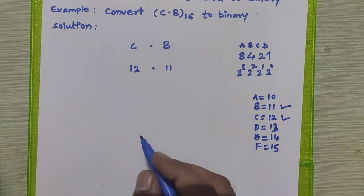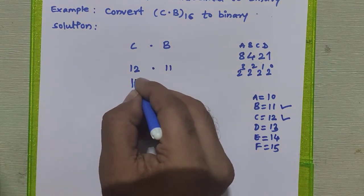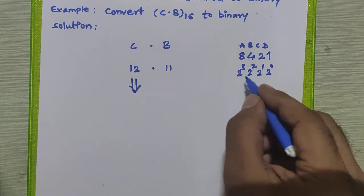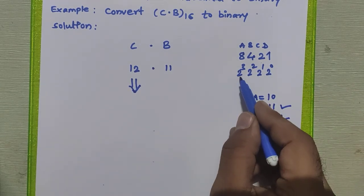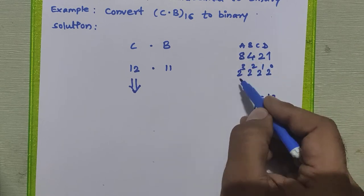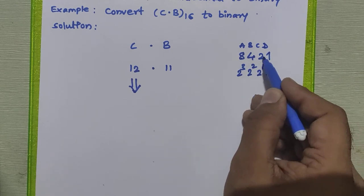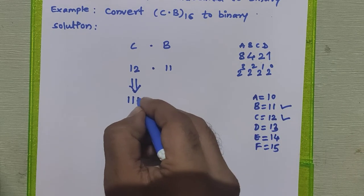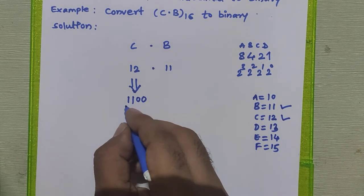Now how to get the binary equivalent for this? We have to write 4-digit binary equivalent for 12. How do you get 12 into this? 8 plus 4 is 12. So these two bits are 11 and these two bits are 00. 1100 is nothing but 12 in binary.